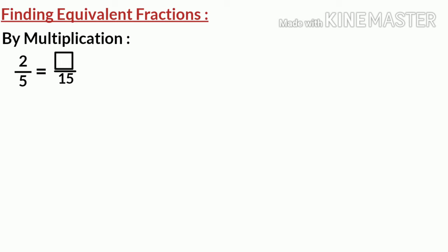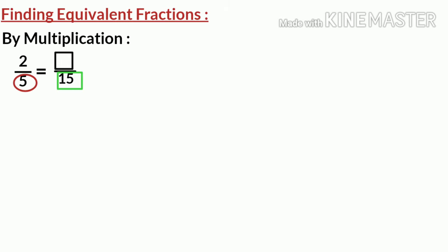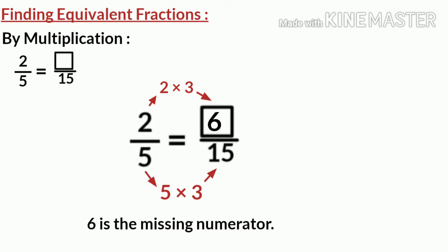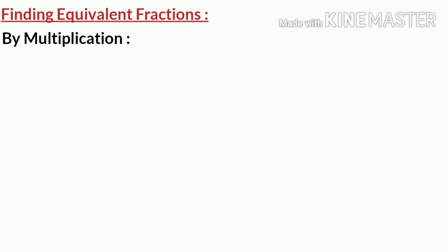The numerator of one fraction is missing, so we look at the denominators of both fractions. Here, 15 — which is the denominator of the fraction with the missing numerator — is greater than 5 and is also a multiple of 5. So we have to find the number which, when multiplied by 5, gives 15. We know that 5 multiplied by 3 gives 15. Since we multiplied the denominator by 3, we also multiply the numerator by 3: 2 multiplied by 3 is 6. So, 6 is the missing numerator.